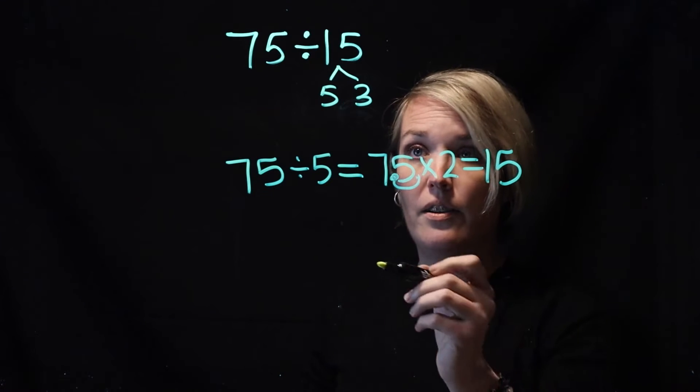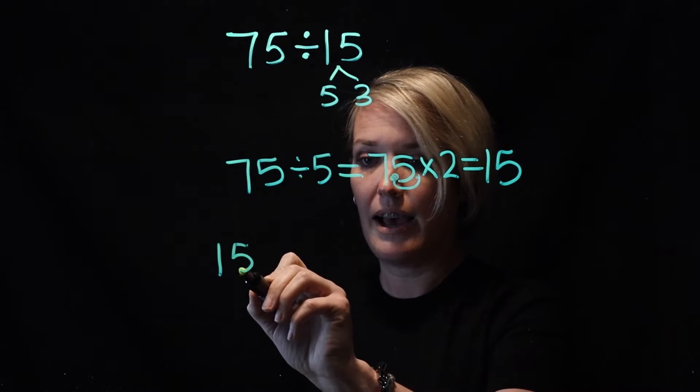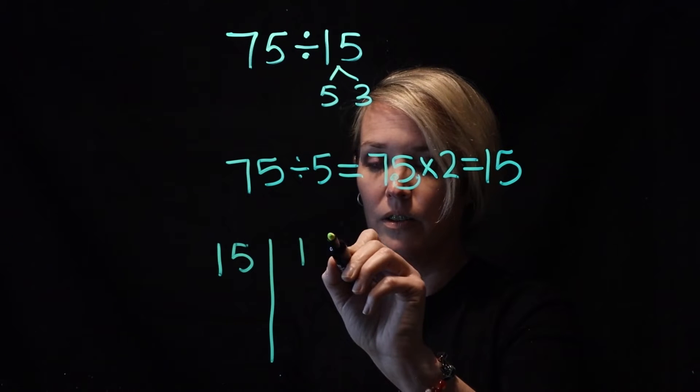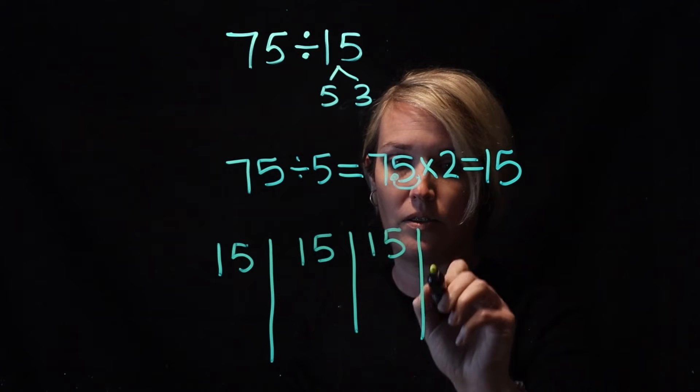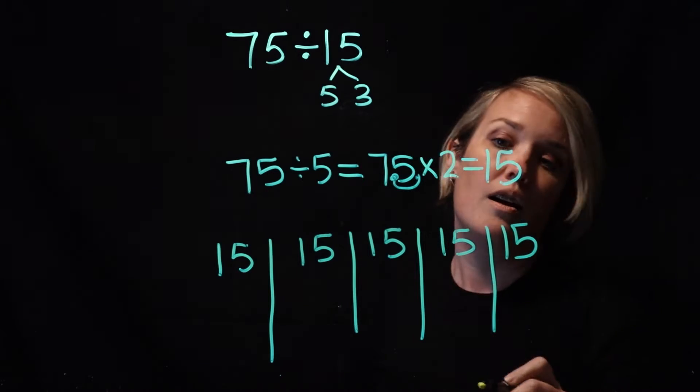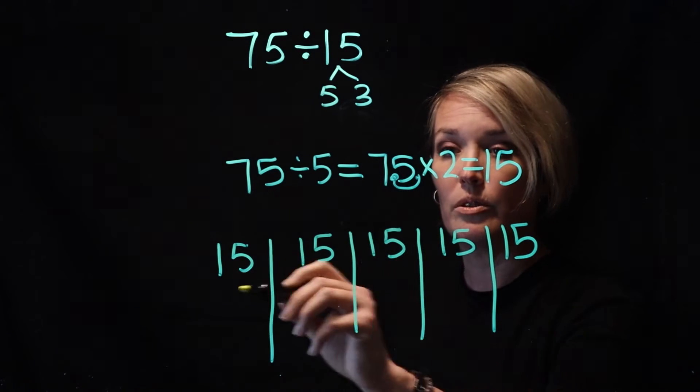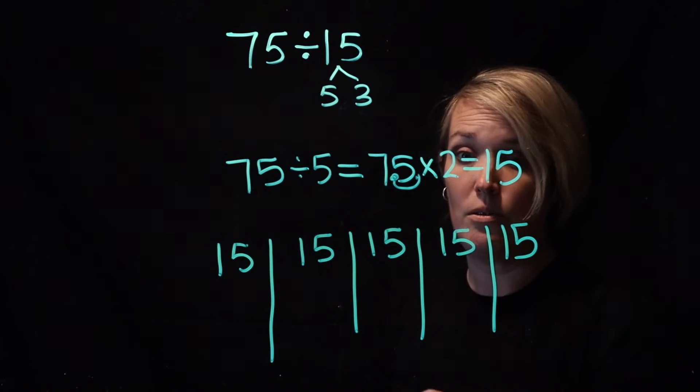So she said, look, I've got 5 equal groups here, and when I add them together, I get 75. So there they are. All right, so she said she's got 5 equal groups, but she doesn't need 5 equal groups - she needs 15 equal groups.